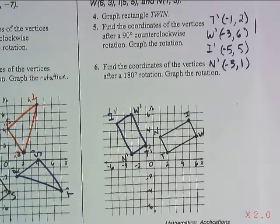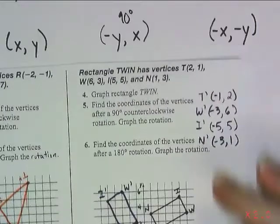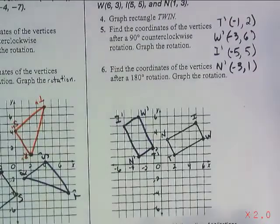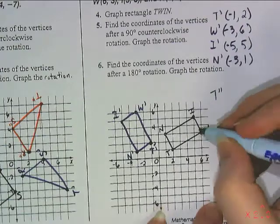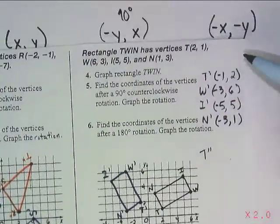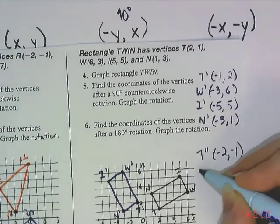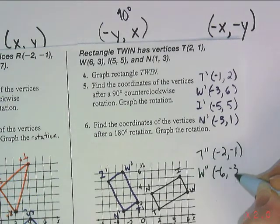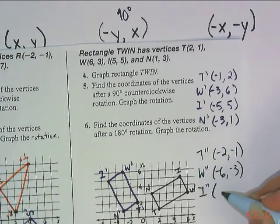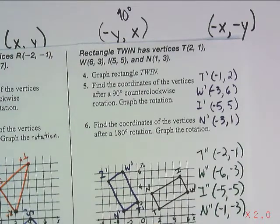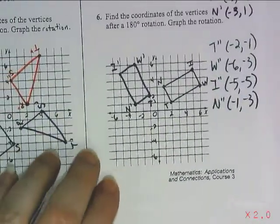As you do now, I want you to try to write the coordinates for the 180-degree rotation that you would make. Remember, go back to the original rectangle's coordinates and apply your rule. So let's see how you did. So T double prime, because now this is our second image. I'm going to go back to my original coordinates and just make everything the opposite. Negative 2, negative 1. Negative 6, negative 3. Negative 5, negative 5. Negative 1, negative 3. So once I plot these coordinates, that should give me my 180-degree rotation.